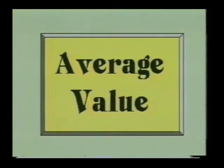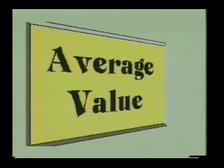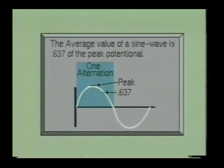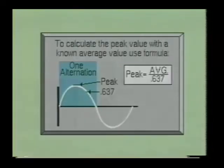Another term used in conjunction with the sine wave is the average value. The average value of the sine wave is the average height of the curve for one alternation of the sine wave. Remember, one alternation is only half a cycle. The average height of a sine wave is found to be 0.637 or 63.7 percent of the peak value. Therefore, to find the average value of a sine wave, you would multiply 0.637 times the peak value.